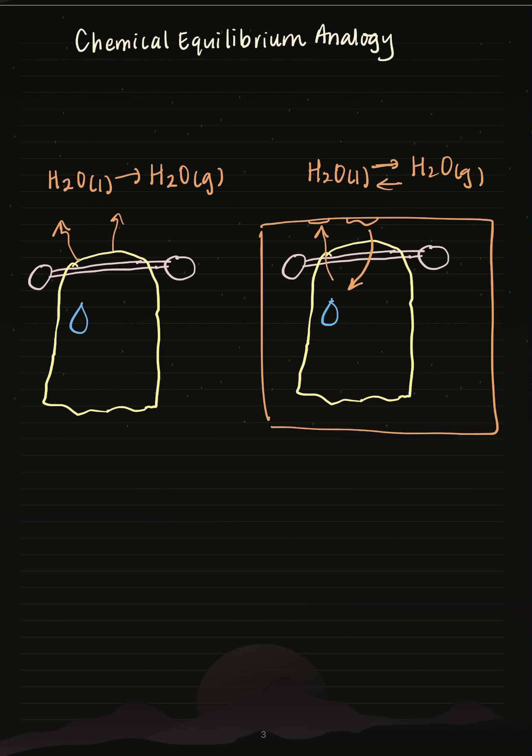When the forward reaction evaporation equals the rate of the reverse reaction condensation, that is what will allow equilibrium to occur.